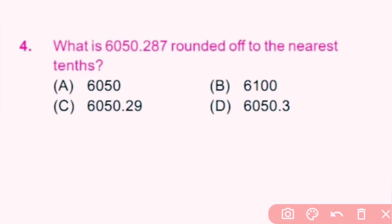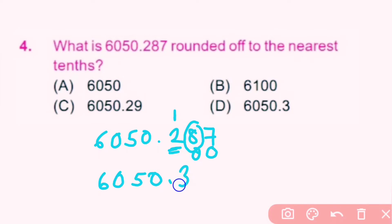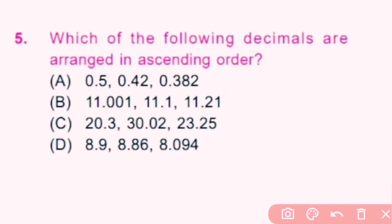Question number 4: What is 50.287 rounded off to the nearest tenth? The tenth place digit is checked, then we look at the hundredth place. The hundredth place digit is more than 5, so we add 1 to the tenth place and the remaining digits become 0. The rounded figure is 50.30. D is the correct answer.